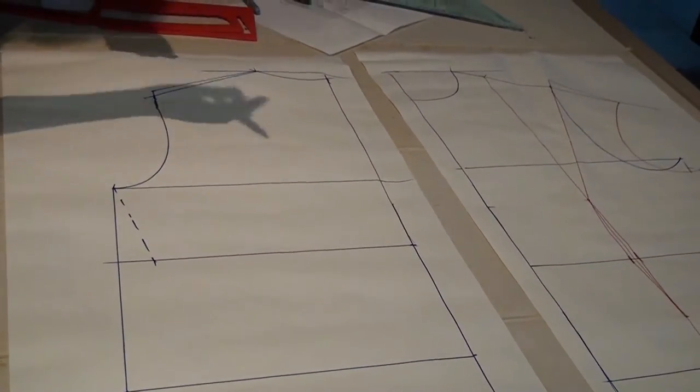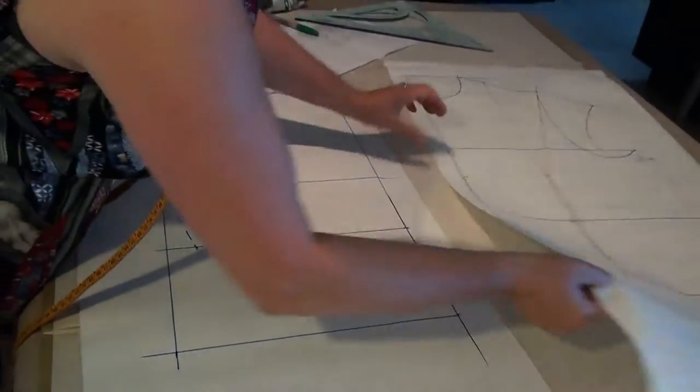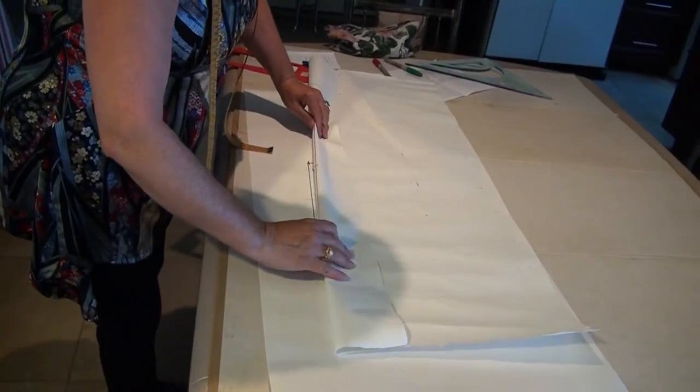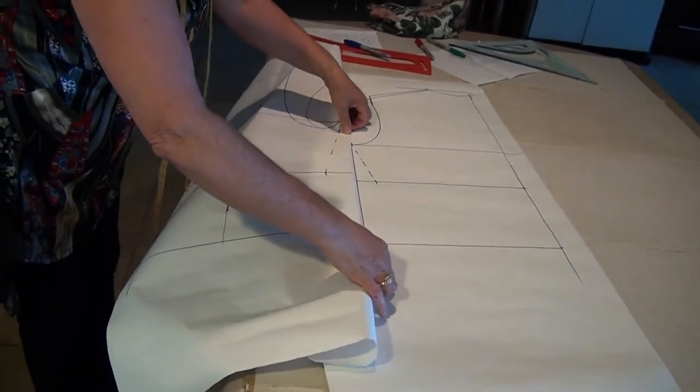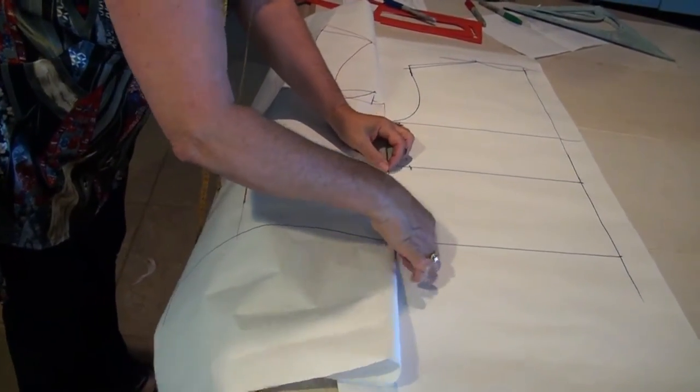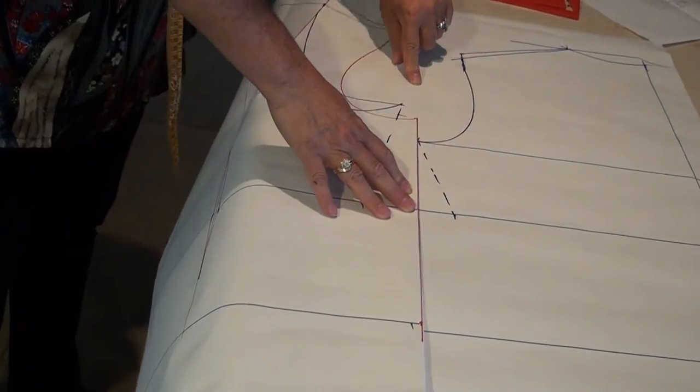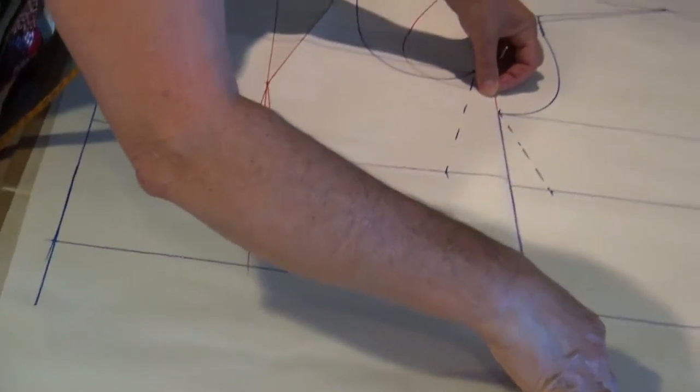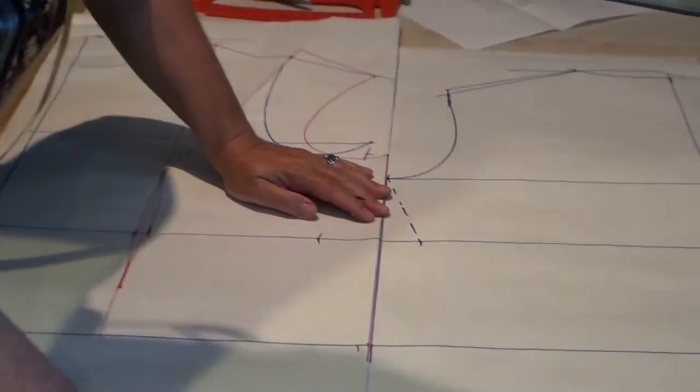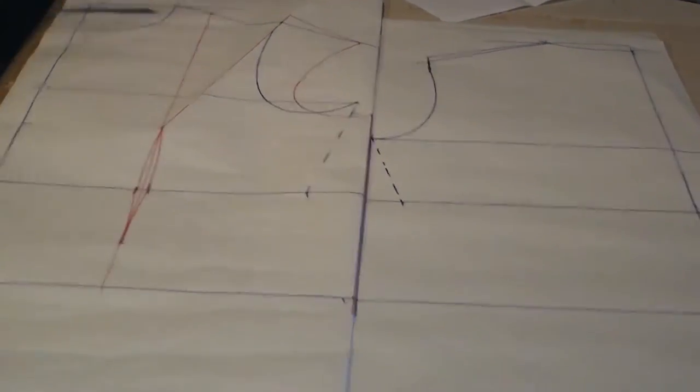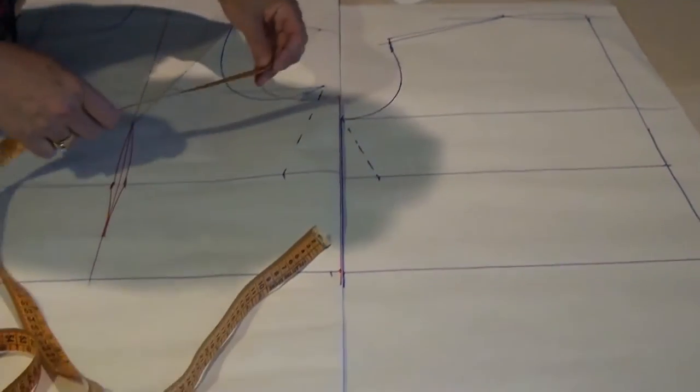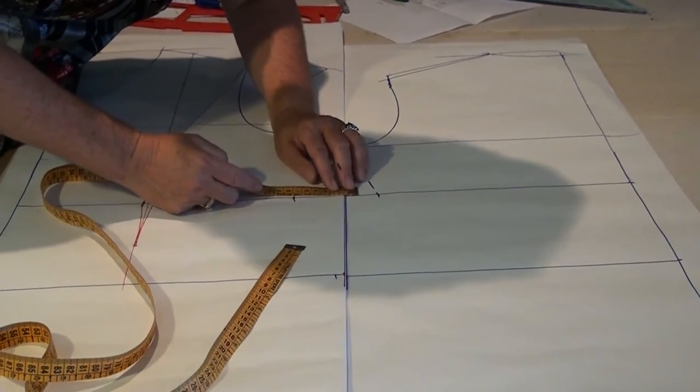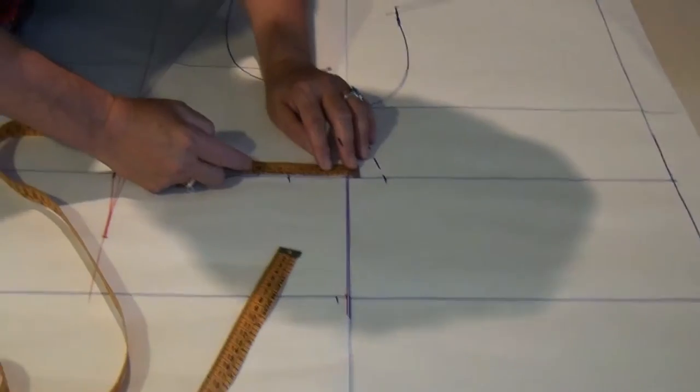So the next step is to take the front or the back, fold it on the straight line, and line up the hips and the waist. Now notice the difference here. That's pretty significant, that is pretty significant. I will address that.